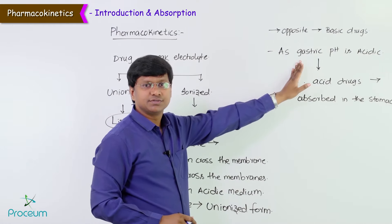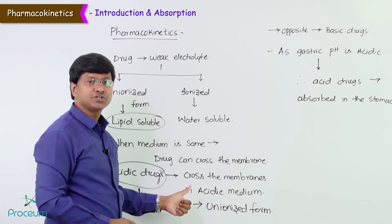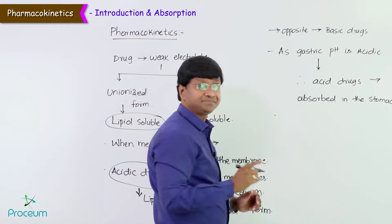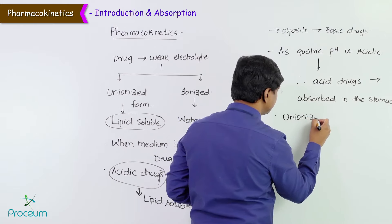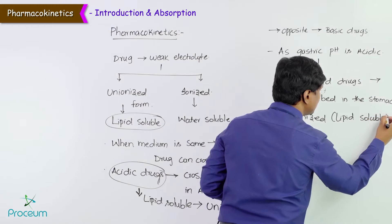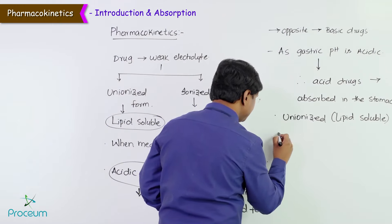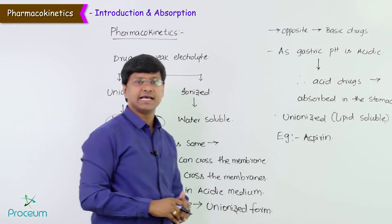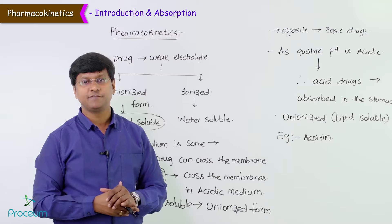Acidic drugs are lipid soluble drugs, and lipid soluble drugs are in unionized form. Because aspirin will be in the unionized lipid soluble form in the acidic stomach, aspirin is more likely to be absorbed in the stomach than morphine or atropine.